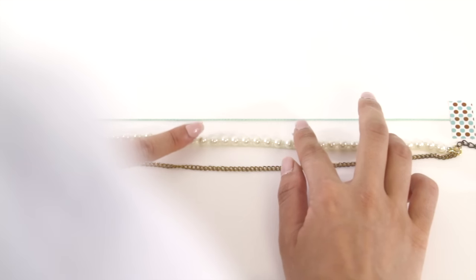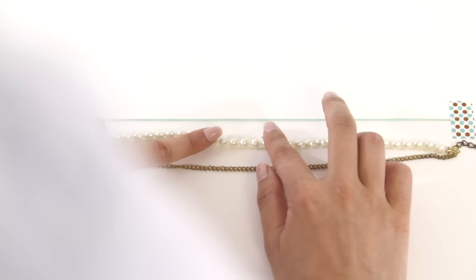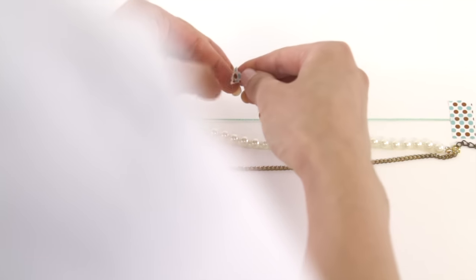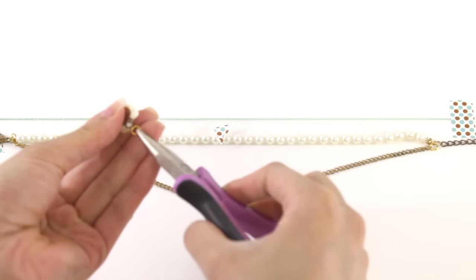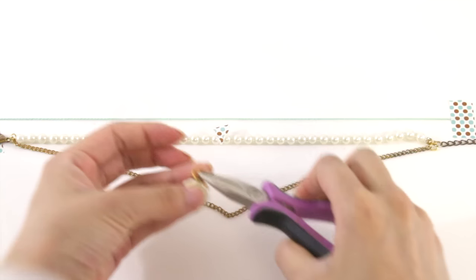Now find the middle of the pearls, and you're going to want to mark it off somehow, I'm just using some tape, just so that I know where the flower is going to go. Using another jump ring, you're going to want to loop in the charm and the chain.